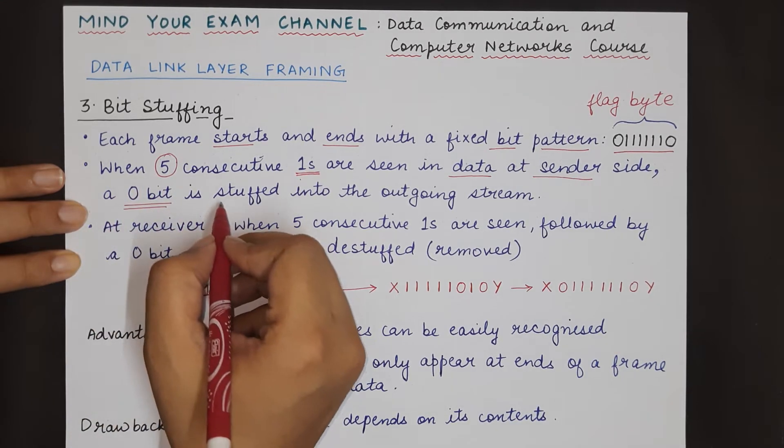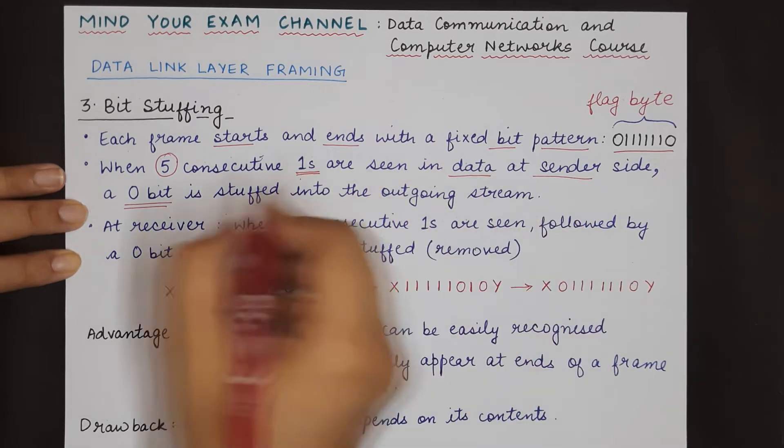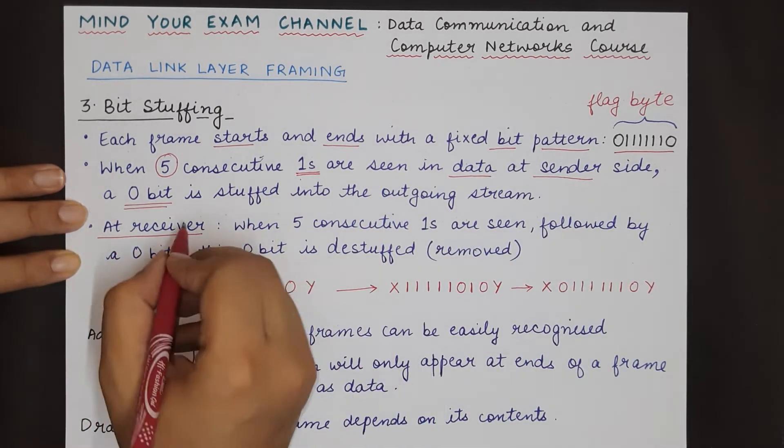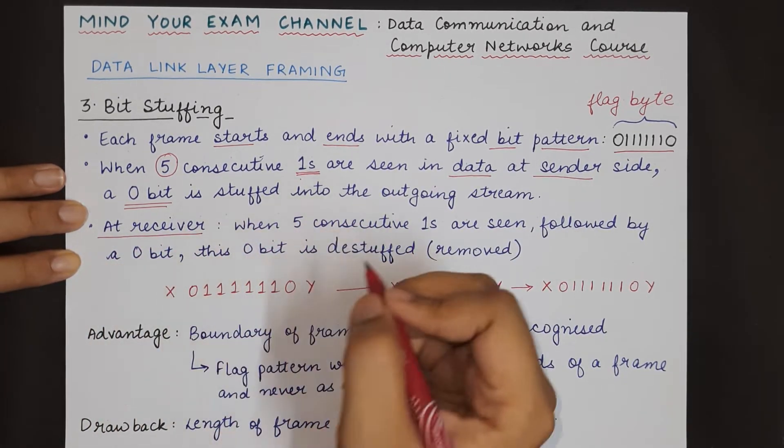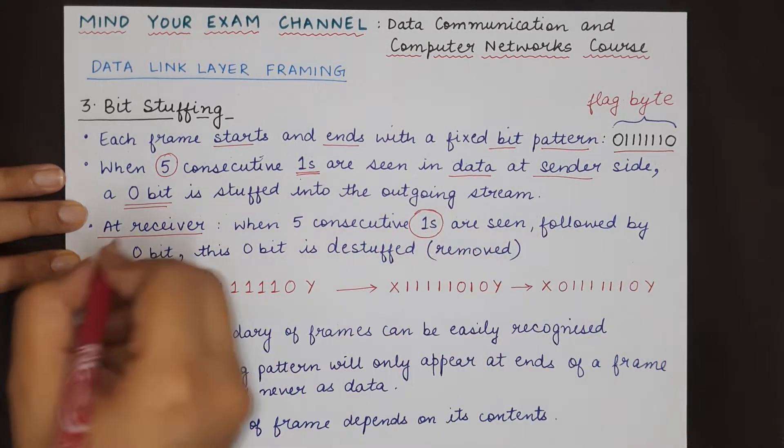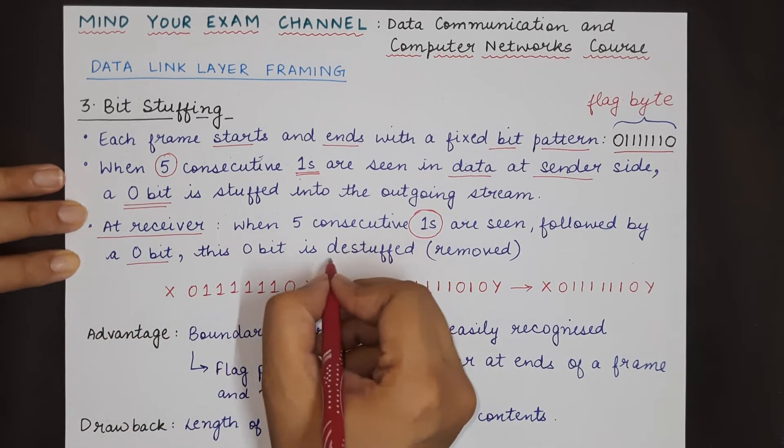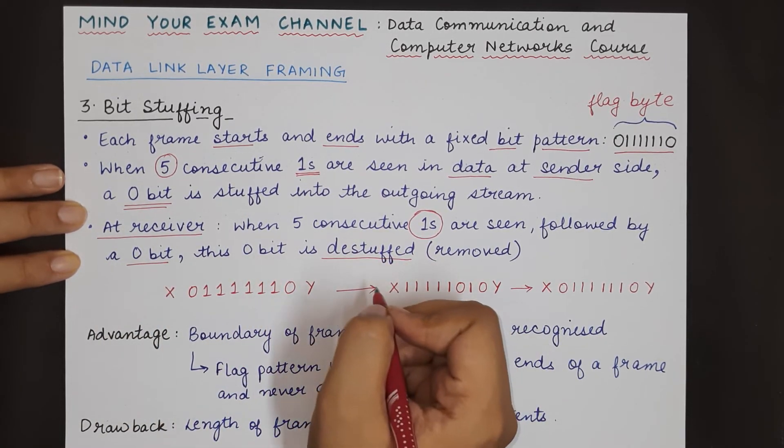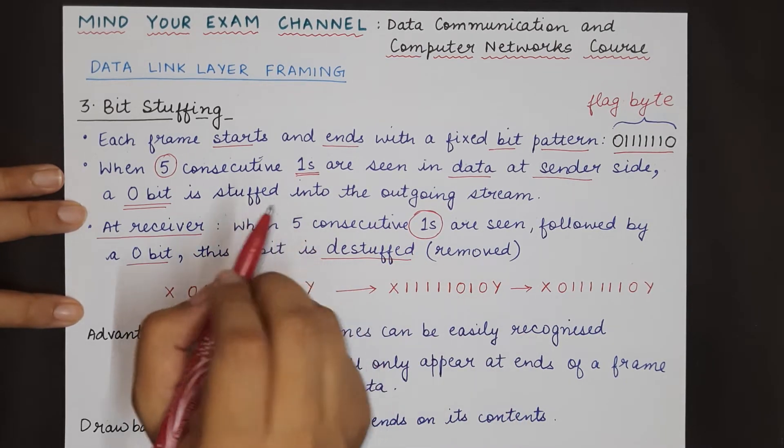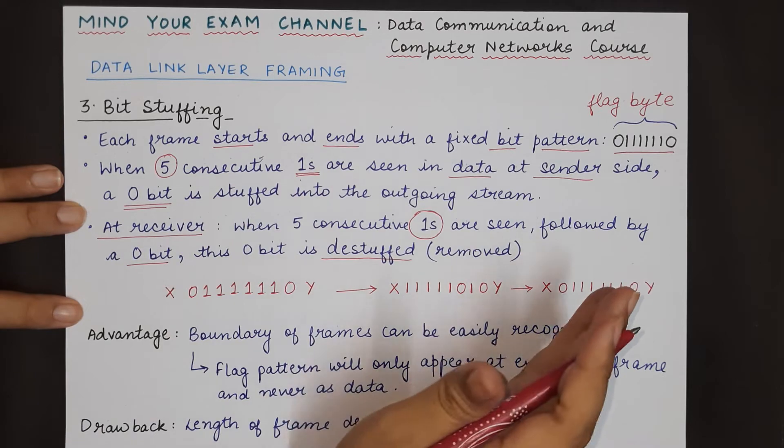What happens at the receiver? At the receiver, whenever the receiving data link layer sees five ones followed by a zero bit, it actually removes this bit or de-stuffs it.